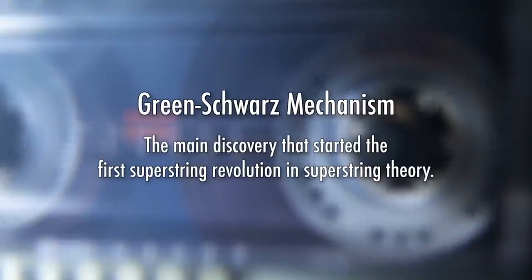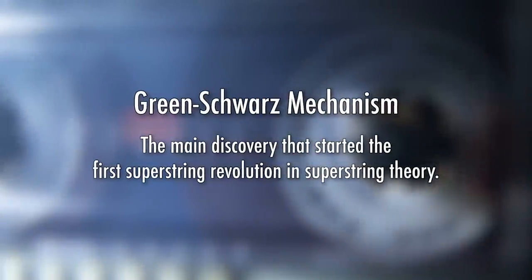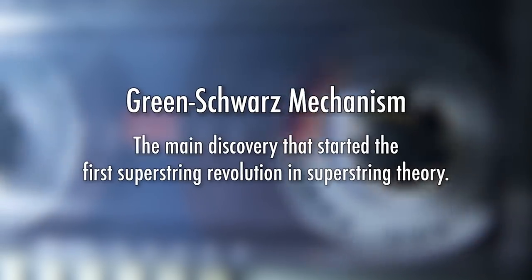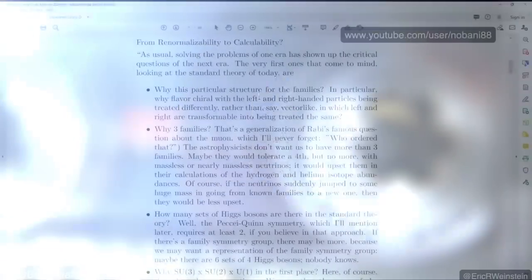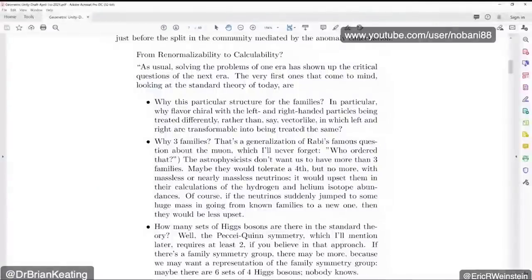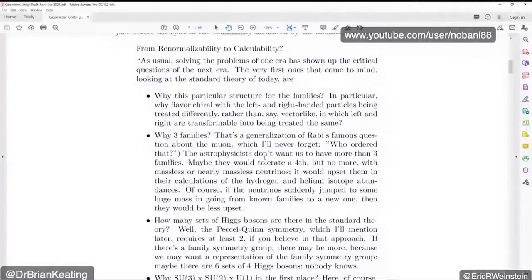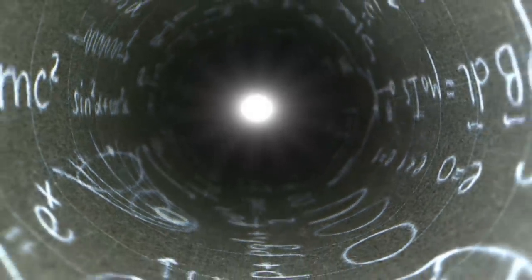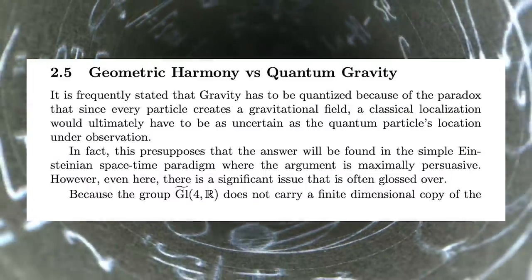And if you think about the original anomaly cancellation of Green and Schwartz in 1984, you could ask what was physics like right before that moment? And I think it's absolutely shocking because we don't realize the extent to which the string theorists really redefined what the major problems in physics were. I think most people in the post-string era somehow believe that the major issue is quantum gravity.